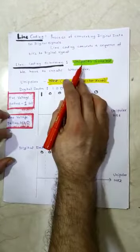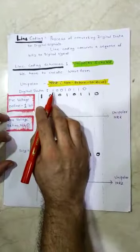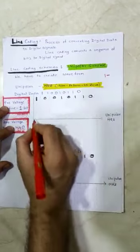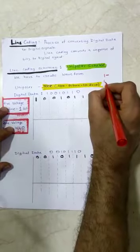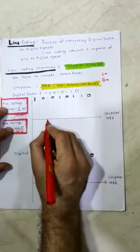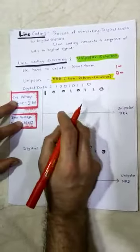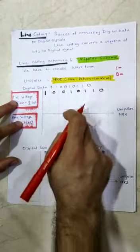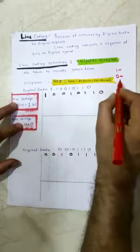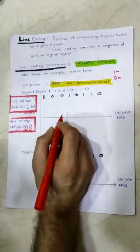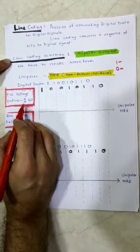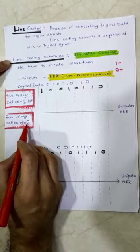In the unipolar scheme, a digital data sample is provided: 1 0 0 1 0 1 1 0. When a one appears, we draw a line above the reference line. When a zero appears, we draw a line on the reference line itself, because in the unipolar scheme all signal levels are on one side of the time axis. In this scheme, a positive voltage defines a one bit, and zero voltage defines a zero bit.